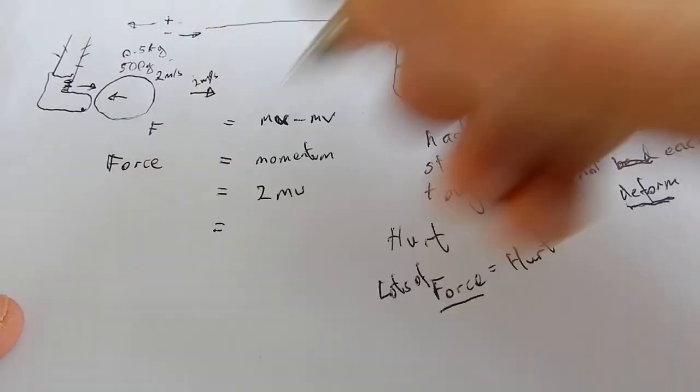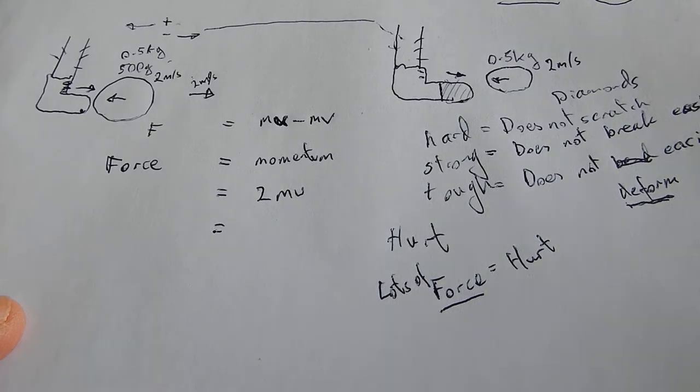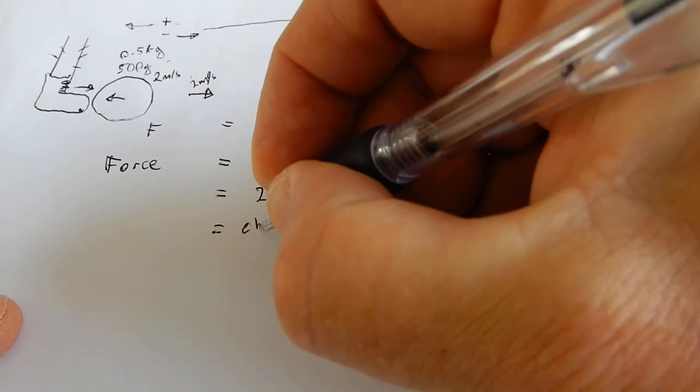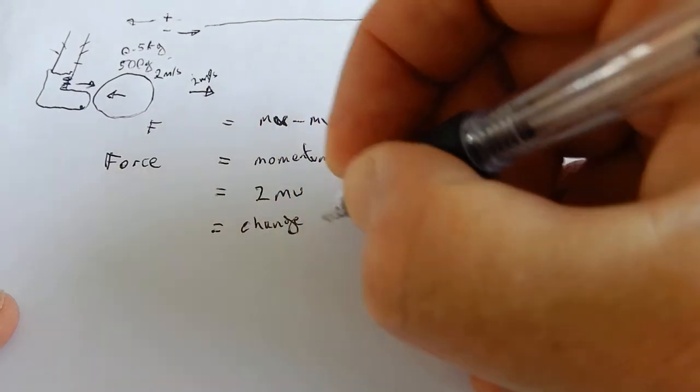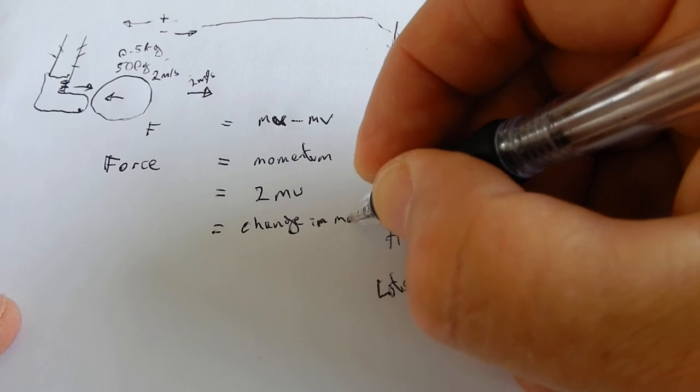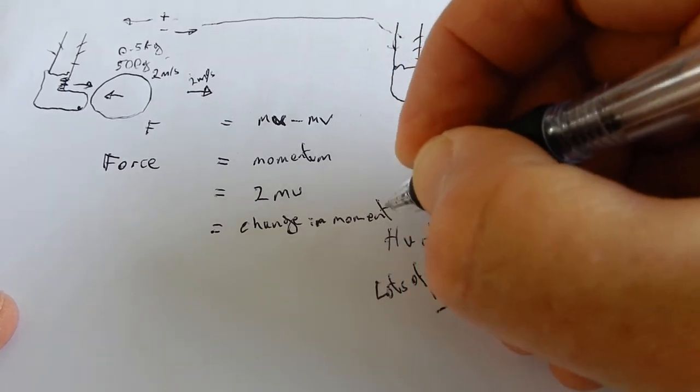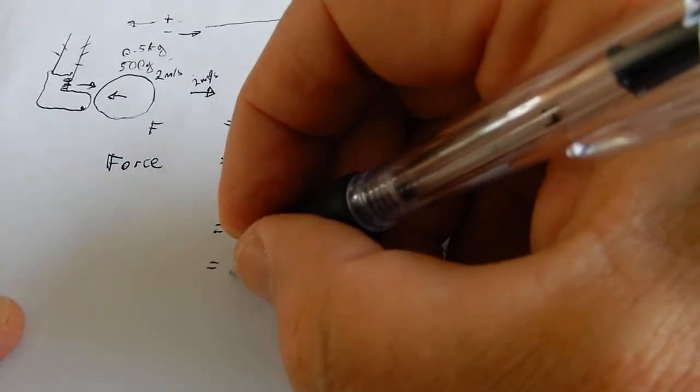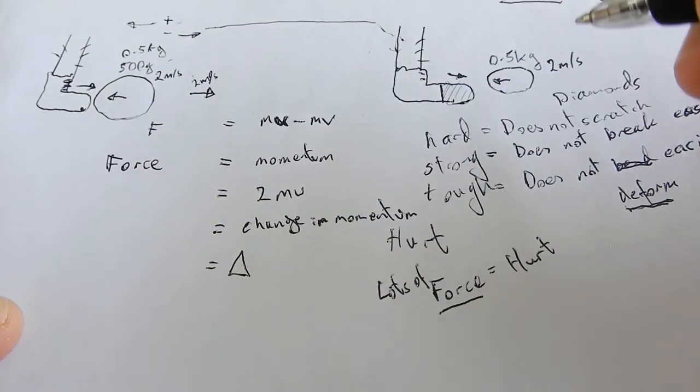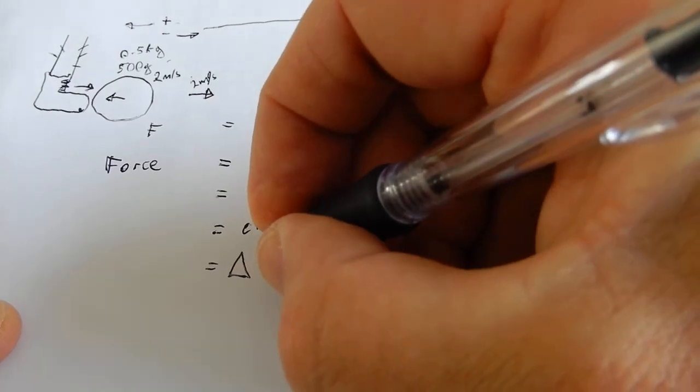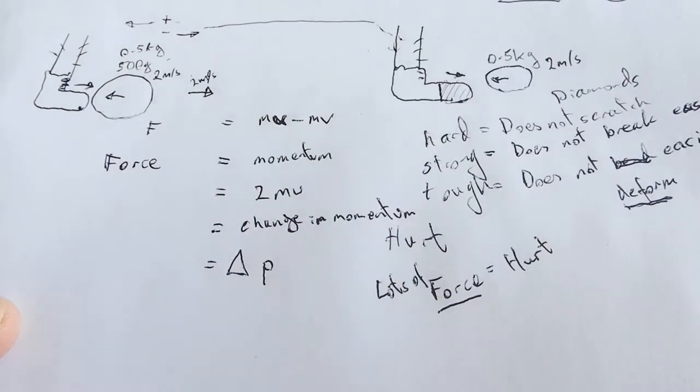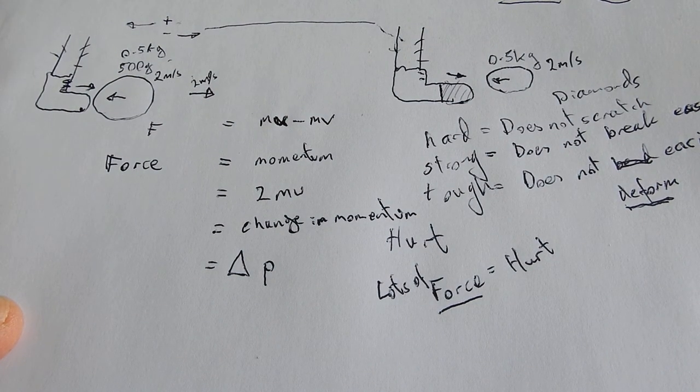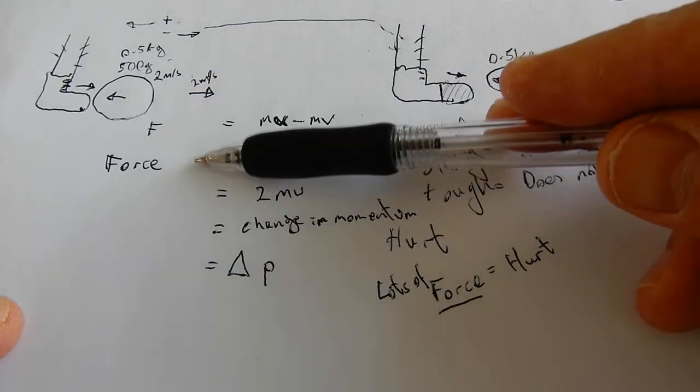But I want to change that even further. Because you know it's not always going to be exactly the same. So we're going to put change in momentum. And now we need to discuss with students what symbol you're going to use for change. And hopefully they've done some A-level mathematics as well. Change in momentum. And it's kind of a soft P. Not quite a rho but a soft P. Change in momentum.